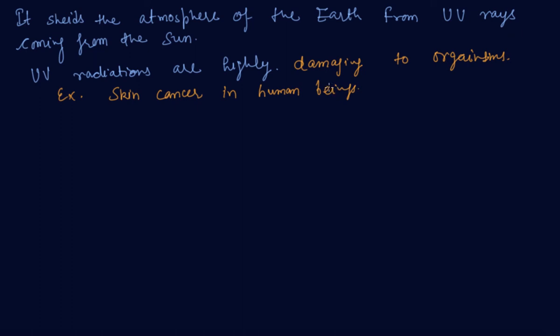Ozone at the higher level of the atmosphere is a product of UV radiation acting on oxygen molecule. So when UV radiation falls on oxygen, it produces oxygen atoms and when this oxygen atom gets combined with oxygen molecules, it produces ozone.